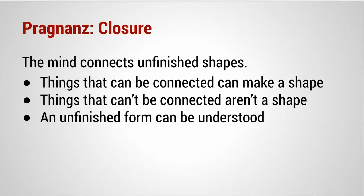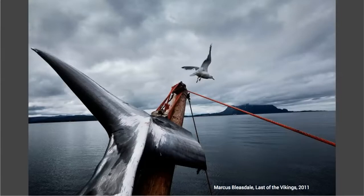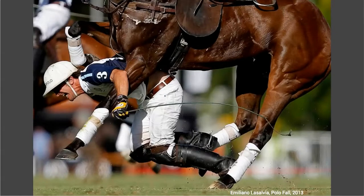Closure — the mind connects unfinished shapes. Things that can be connected can make a shape; things that can't be connected we imagine are not a shape. What's really important is that an unfinished form can still be understood. In this image, we understand this is a whale or shark tail — we understand it as the tail of an animal, even though it's cut off. We don't need the whole image to understand what it is. And the fact that it is cut off tells us right away that this animal has been hunted or poached.